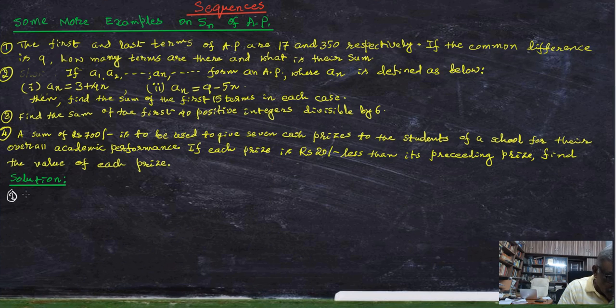First case, we need to find out the terms of AP given a_n in terms of n only. Therefore, a_1 equal to 3 plus 4 into 1, that is 7.